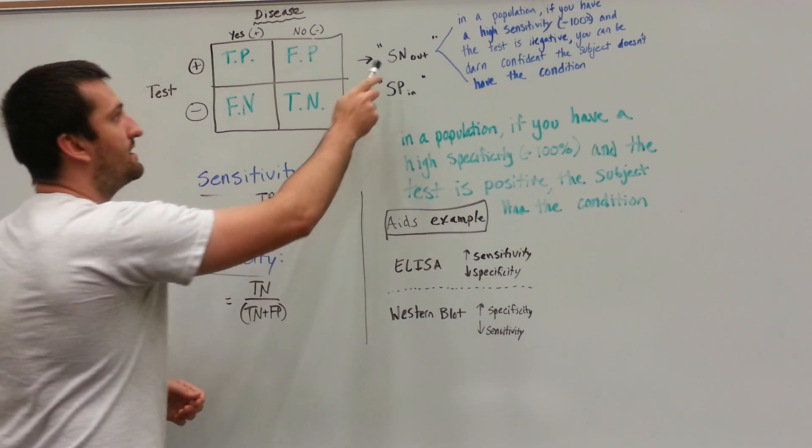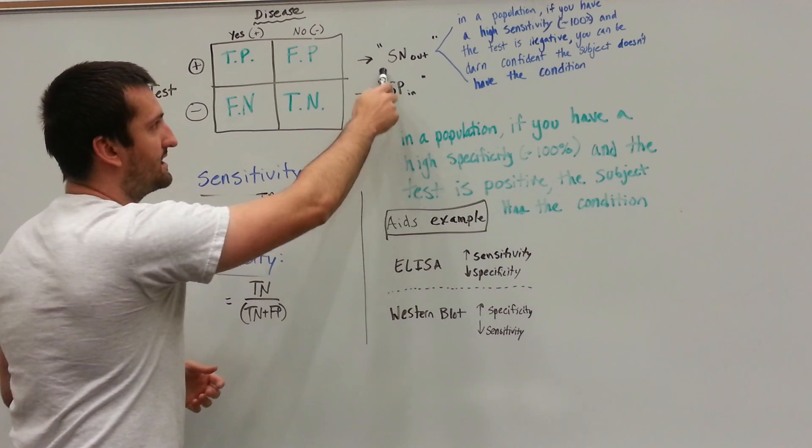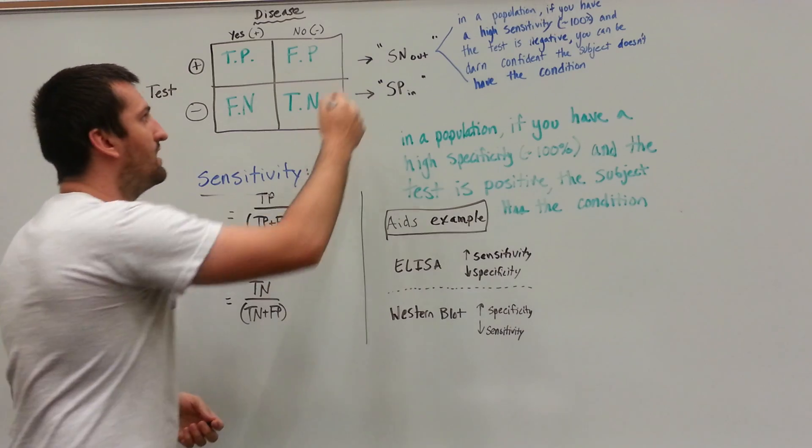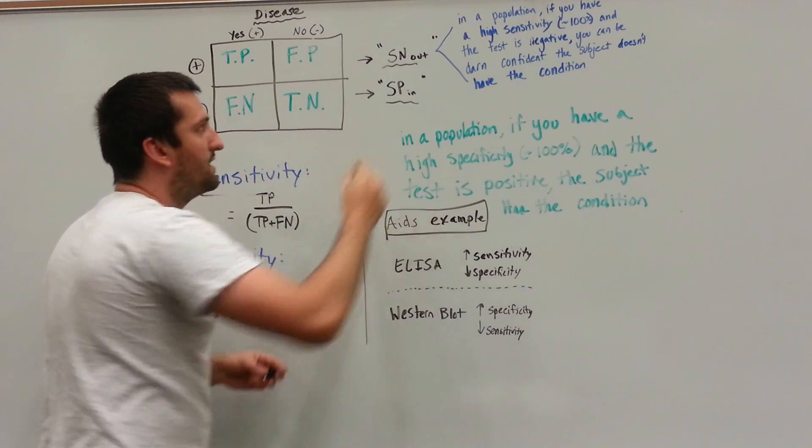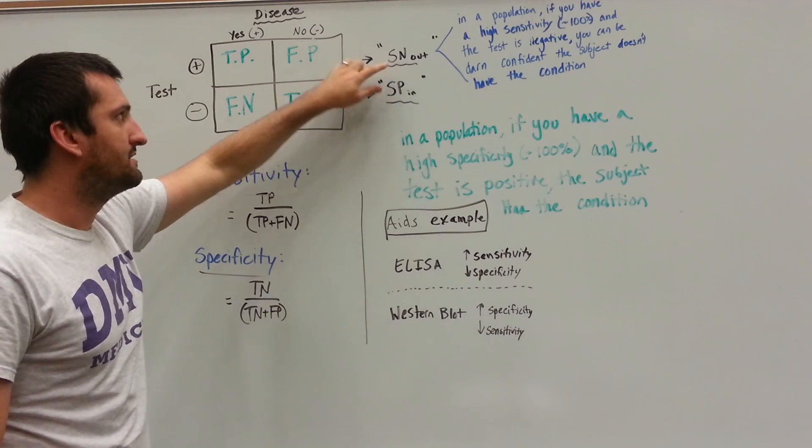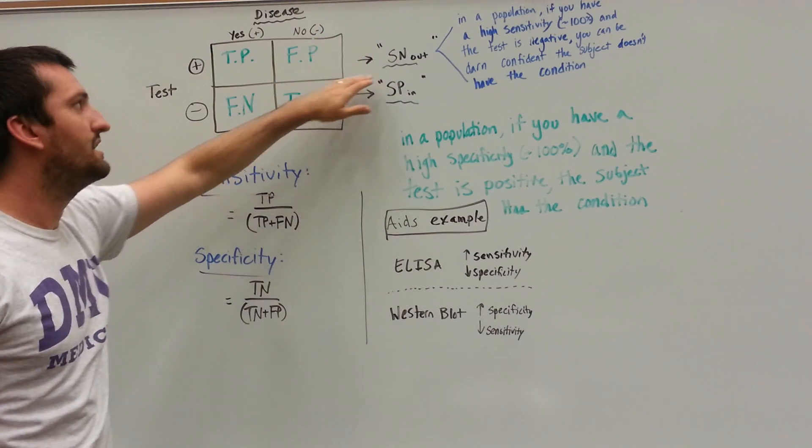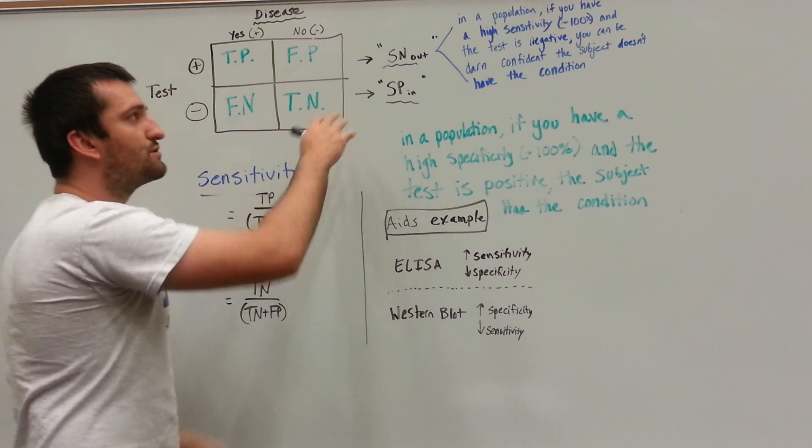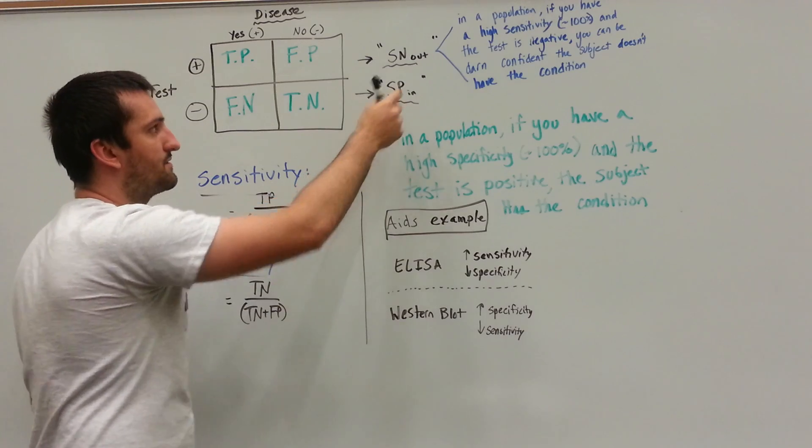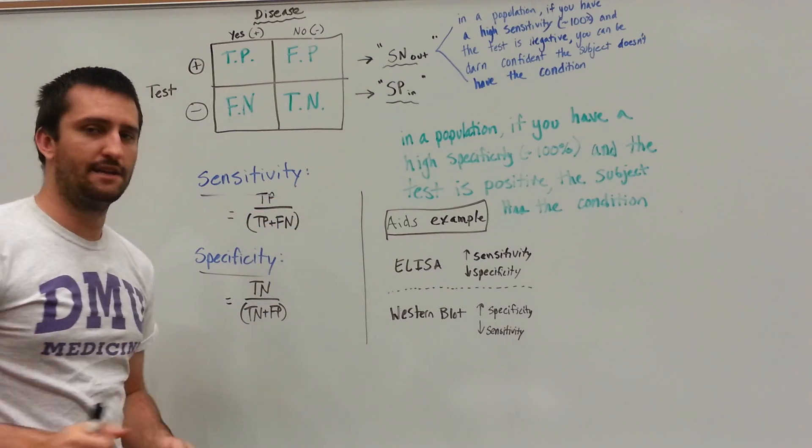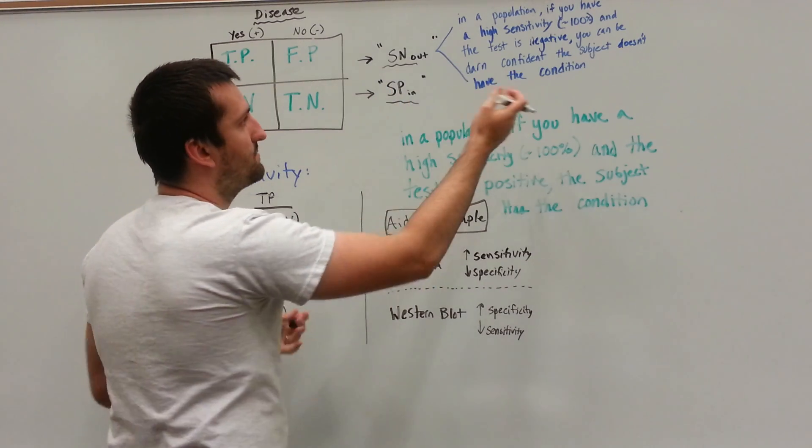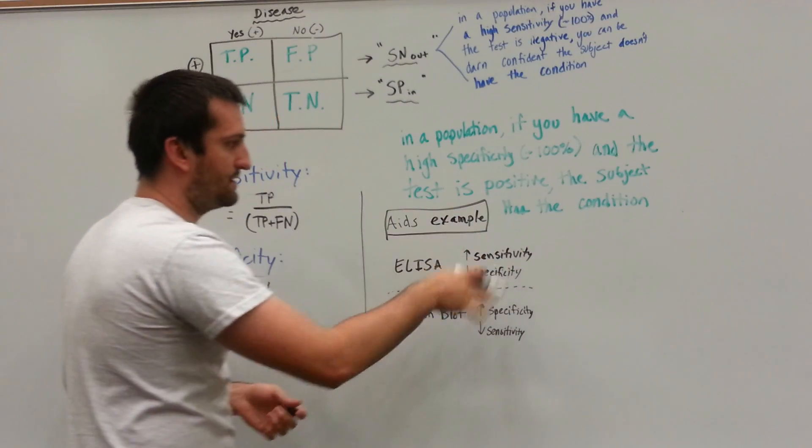And you may have heard the SpIn and SnOut. This has typically been taught, I think, pretty poorly. What it's trying to go for is sensitivity SN, so S for sensitivity out, SnOut. It rules out a disease. SpIn for specificity, SP for specificity, rules in a disease. Now, what in the world are we talking about? Well, I have something that I wrote out and then a little example down here in the black.